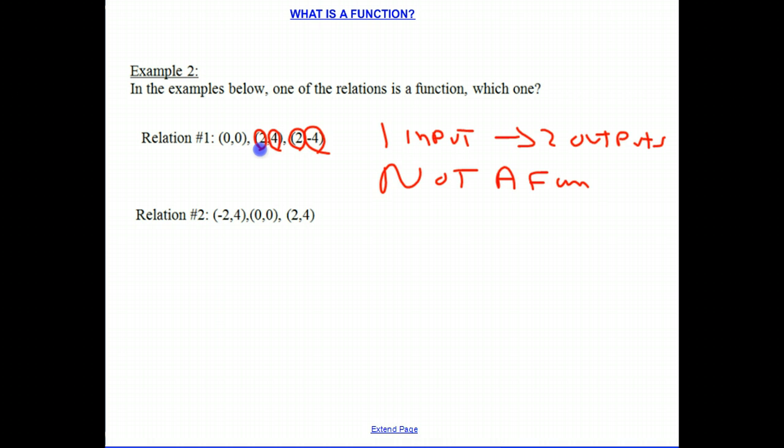If we look at the next example, negative 2 gives you 4, 0 gives you 0, 2 gives you 4. Each input gives exactly one output. Therefore, this is a function. One input will give you one output.